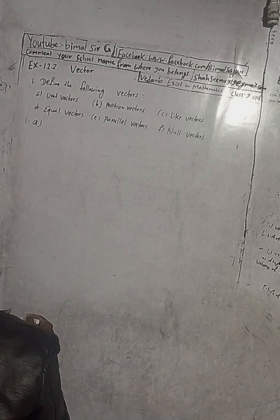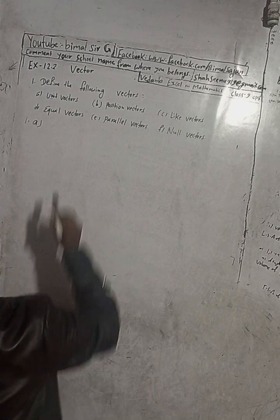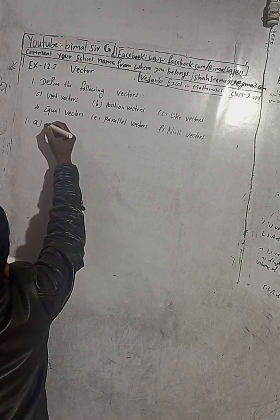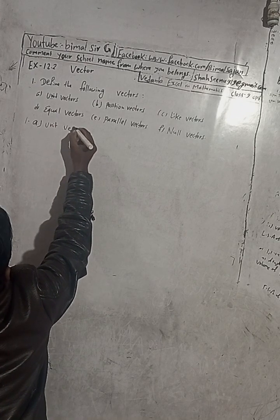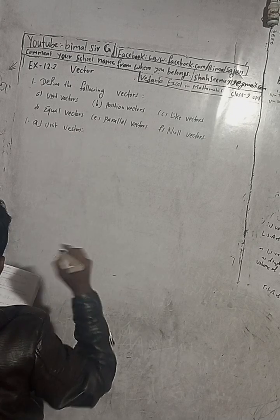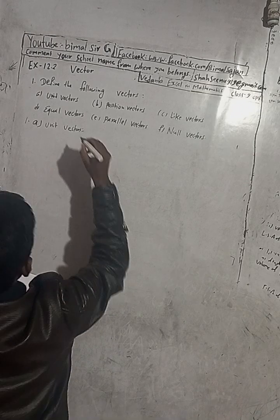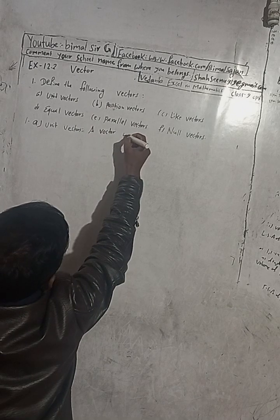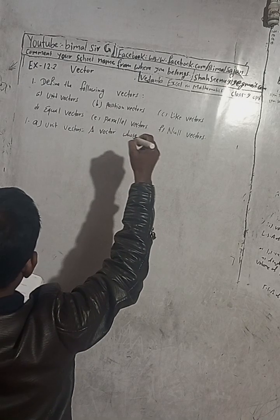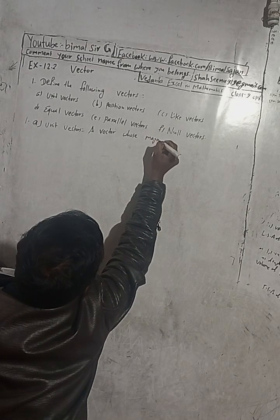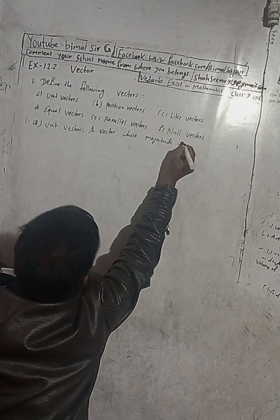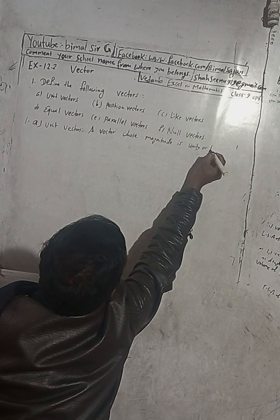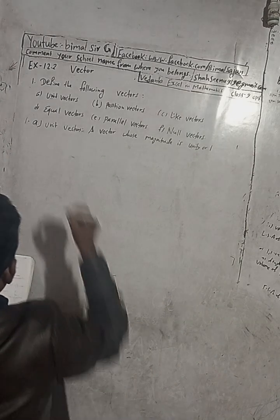Now the question is: define the following vectors. Number A is unit vectors. So, what are unit vectors? A unit vector is a vector whose magnitude is unity, or one.